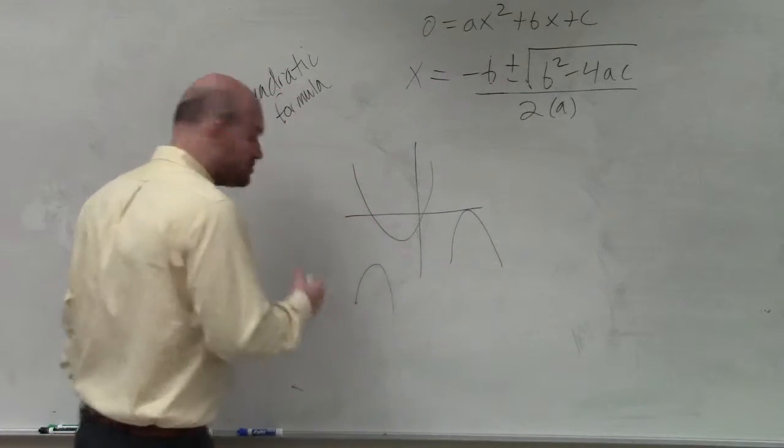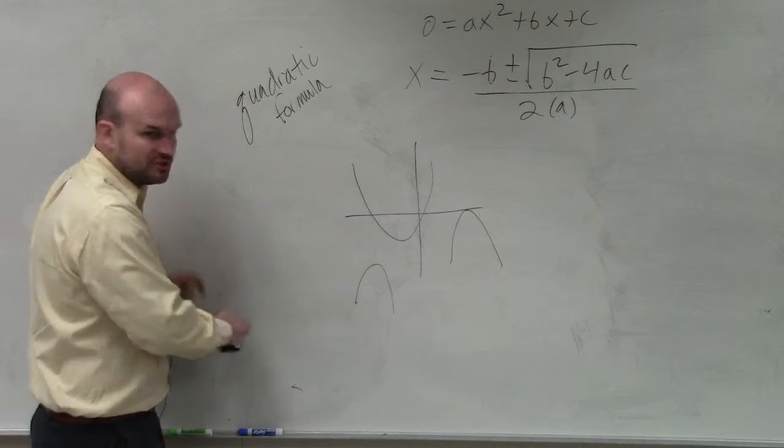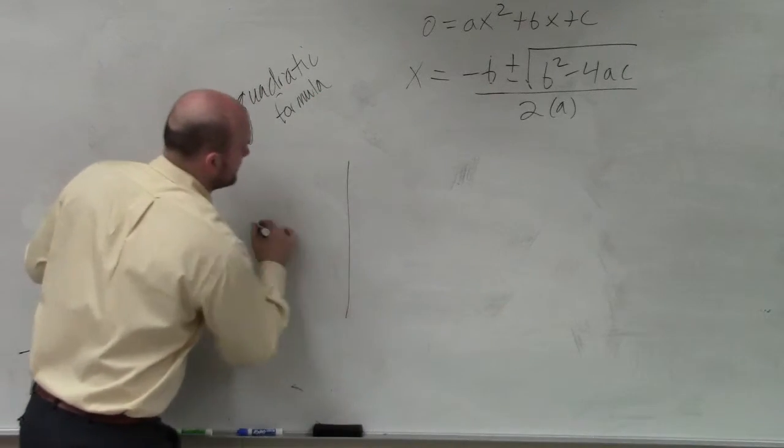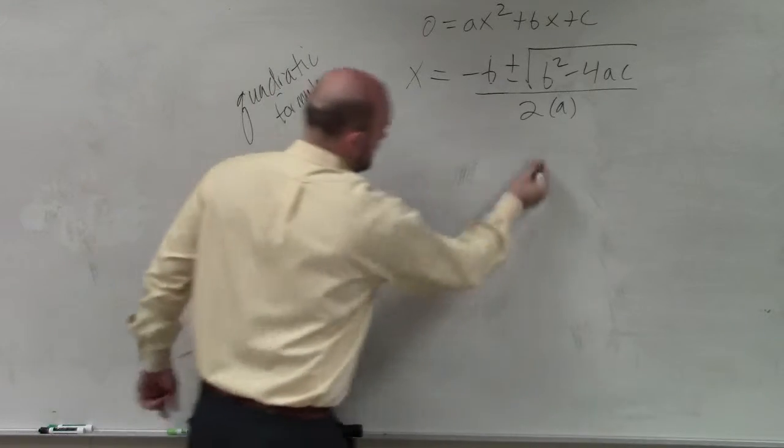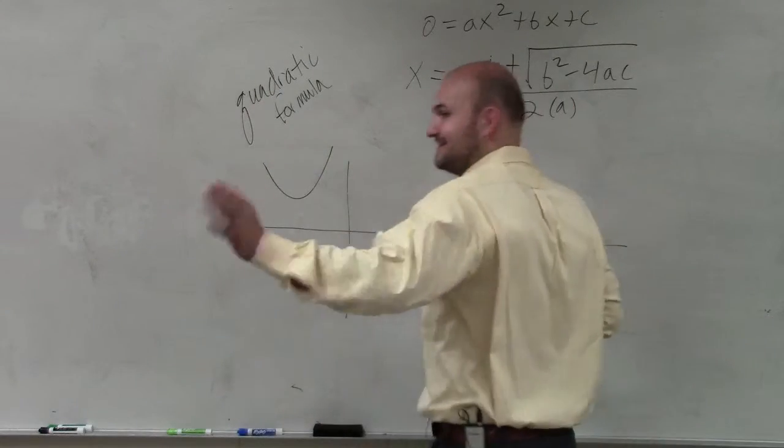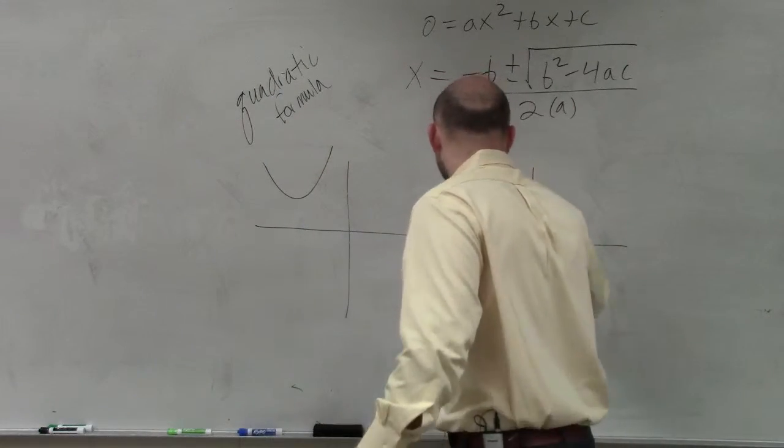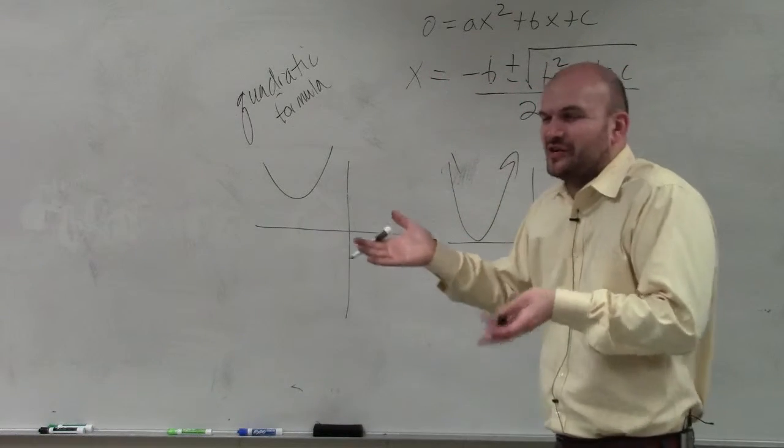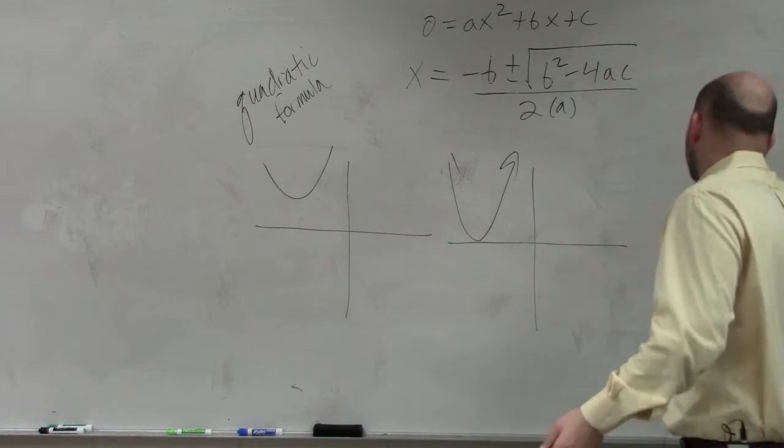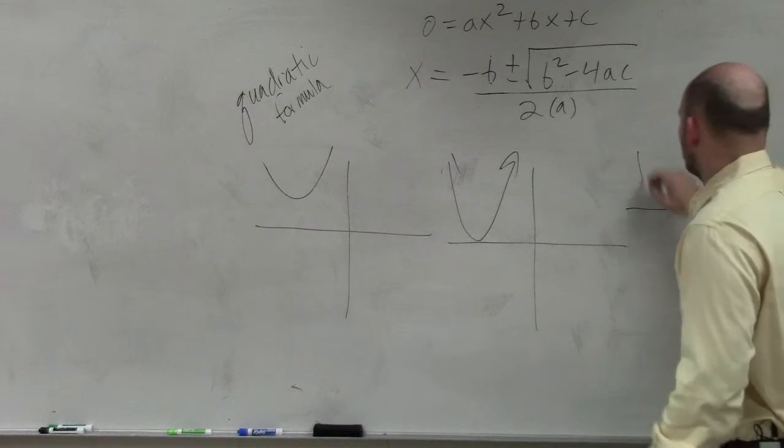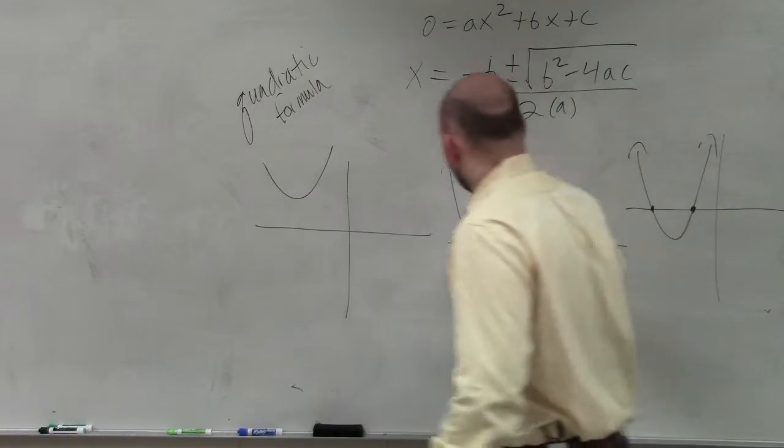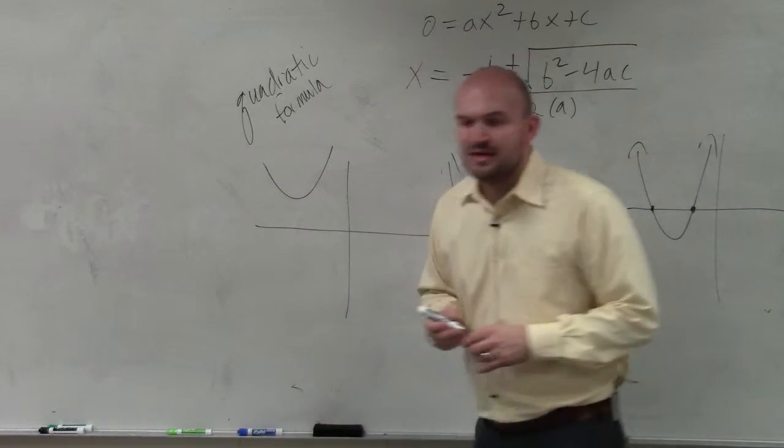Remember we talked about the solutions. There's three different options for your solutions, right? Let's go through them again. Well, there's technically two. If they're rational numbers or irrational numbers, that's not really a different type, right? That's just kind of being a little bit more descriptive. But basically you can have two solutions, one solution, or no solutions.